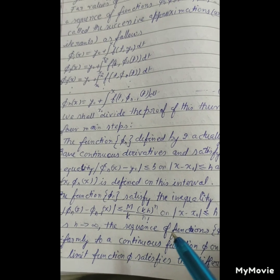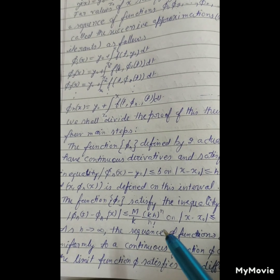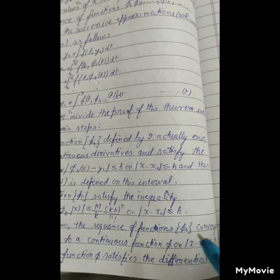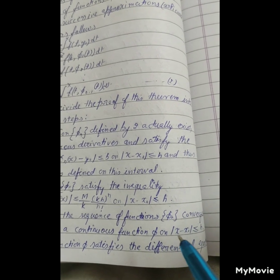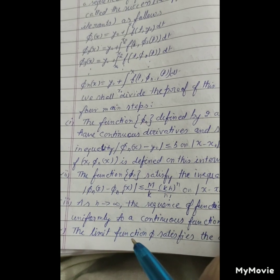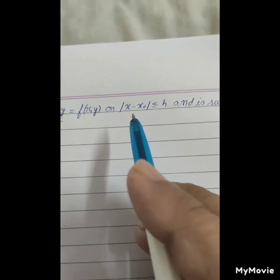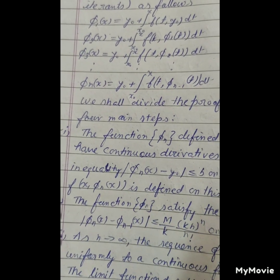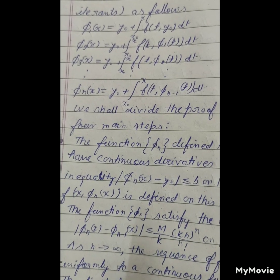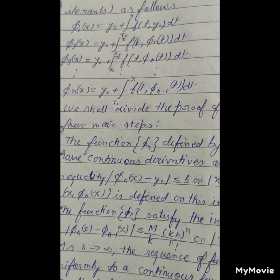Step 3: As n tends to infinity, the sequence of functions φₙ(x) converges uniformly to a continuous function φ(x) on |x - x₀| ≤ h. Step 4: The limit function φ(x) satisfies the differential equation dy/dx = f(x, y) on |x - x₀| ≤ h, and φ(x₀) = y₀.